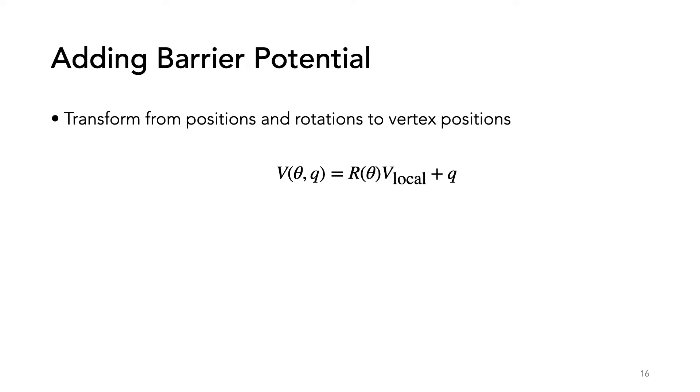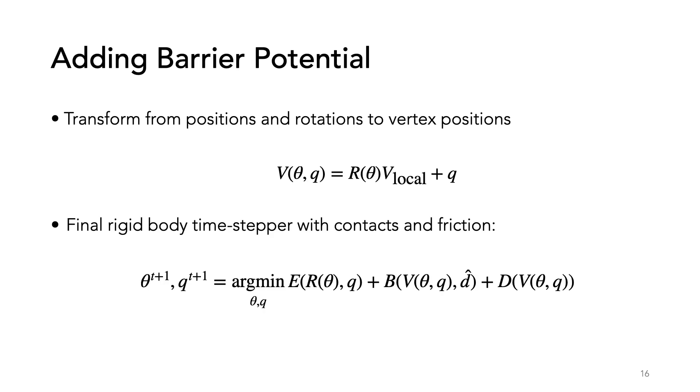To reuse IPC's barrier potential, we transform from positions and rotations to vertex positions. We then apply the original barrier dissipated potential to get our final time stepper.